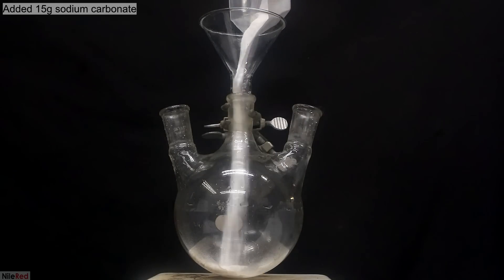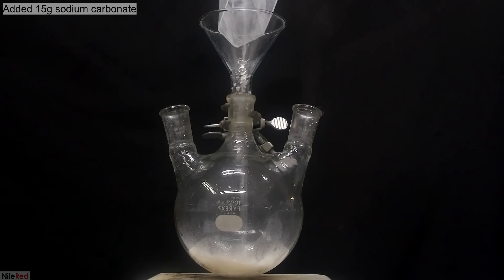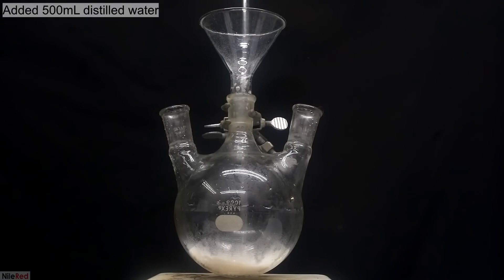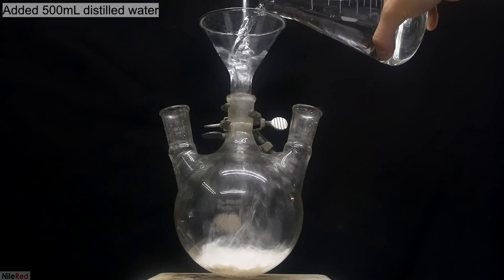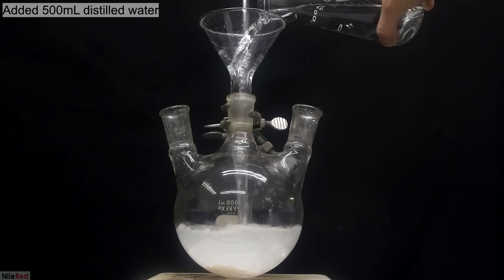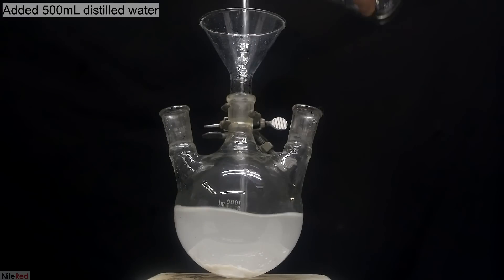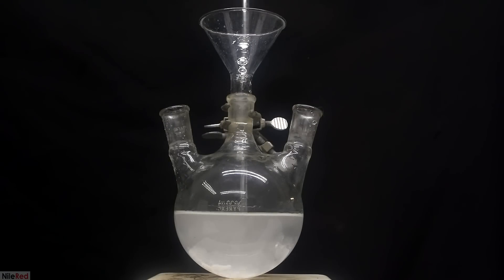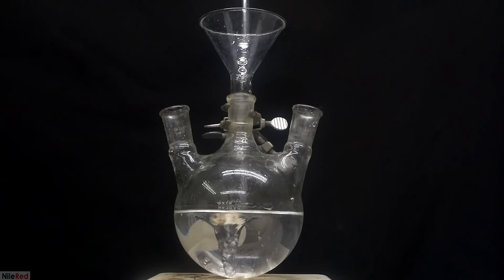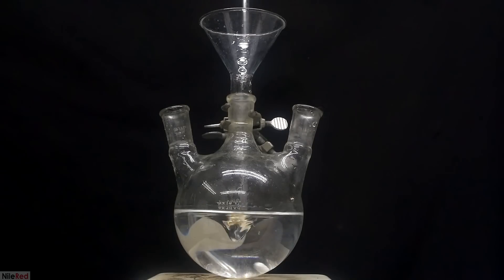I start things off by adding about 15 grams of sodium carbonate. On top of the sodium carbonate, I added in about 500 milliliters of distilled water. I turned on the stirring and I mixed things until everything had dissolved. Just after a few minutes of stirring, everything seemed to have dissolved and we're left with roughly a 3% solution of sodium carbonate.